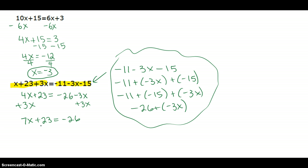Finally, I have a two-step equation. I'm going to get rid of that plus 23, so I'm going to subtract 23 from both sides. And negative 26 minus 23 is the same as negative 26 plus negative 23, which is a negative 49.